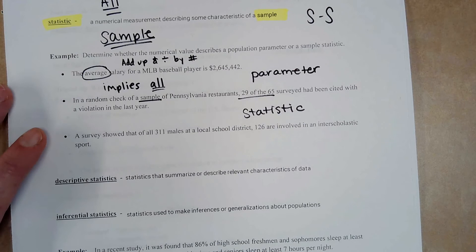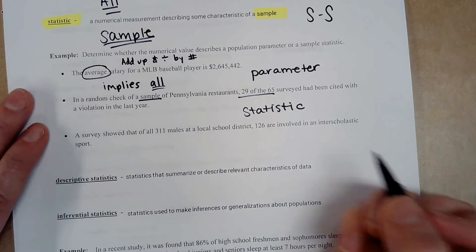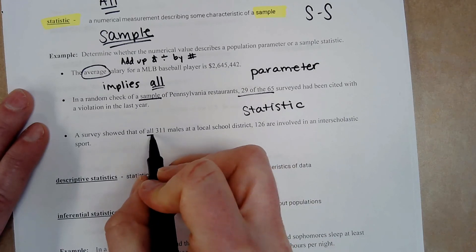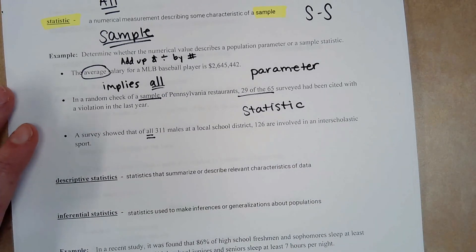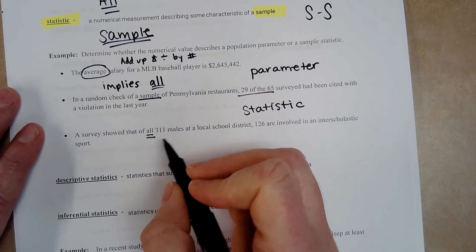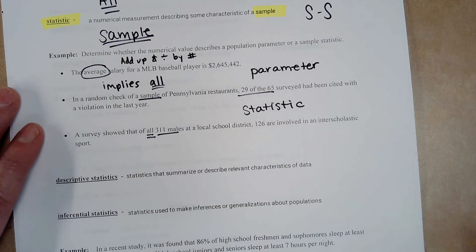The next one, a survey showed that of all 311 males at a local school district, 126 are involved in an interscholastic sport. What's the key word? All. So they took all of the males. And they asked, are you part of a sport or are you not? Or maybe they looked at the records, the school records.